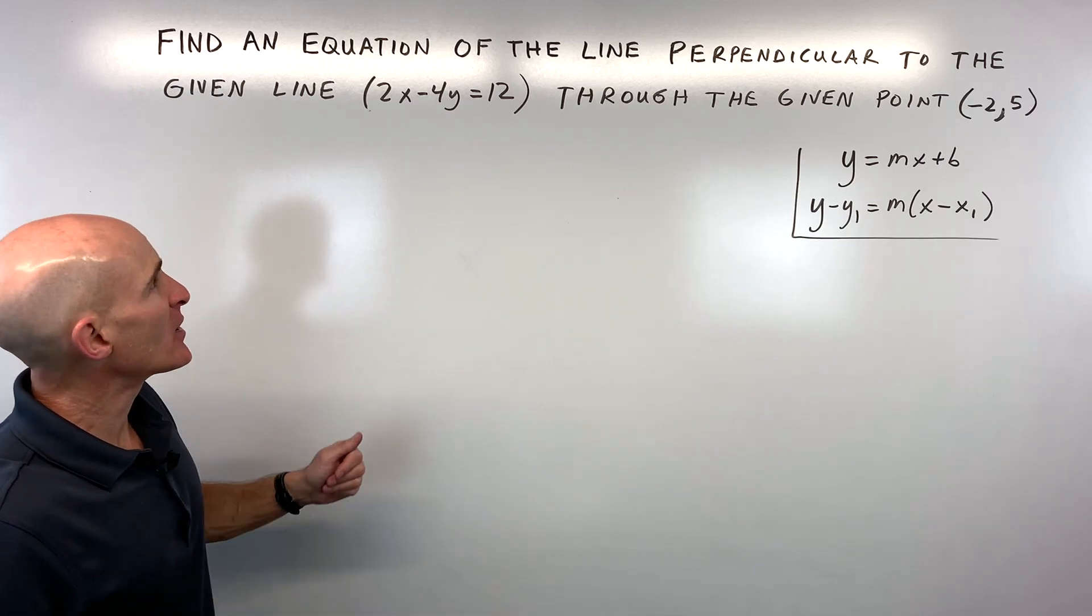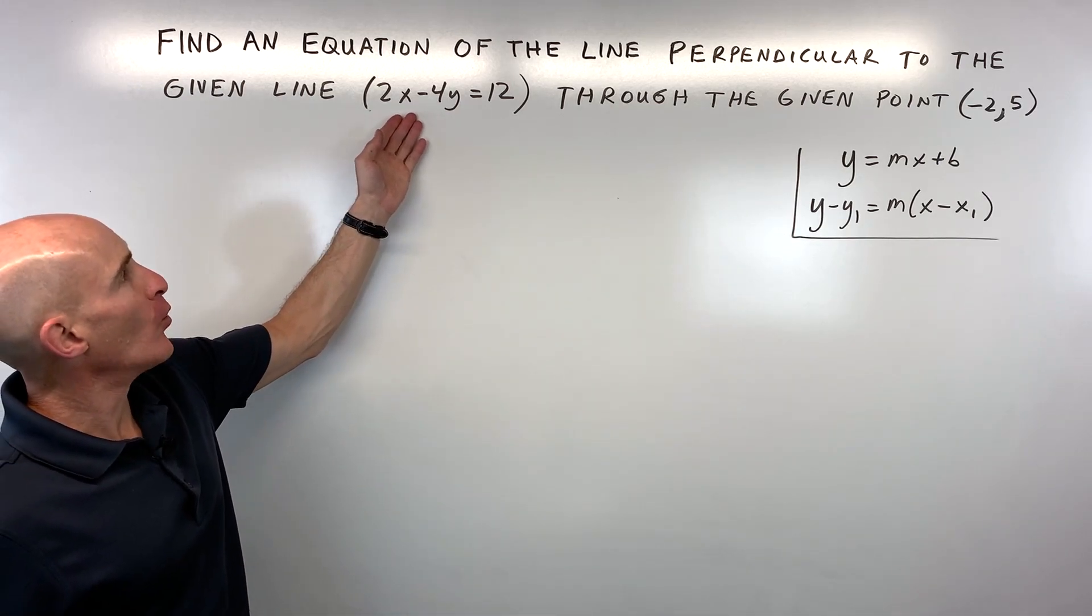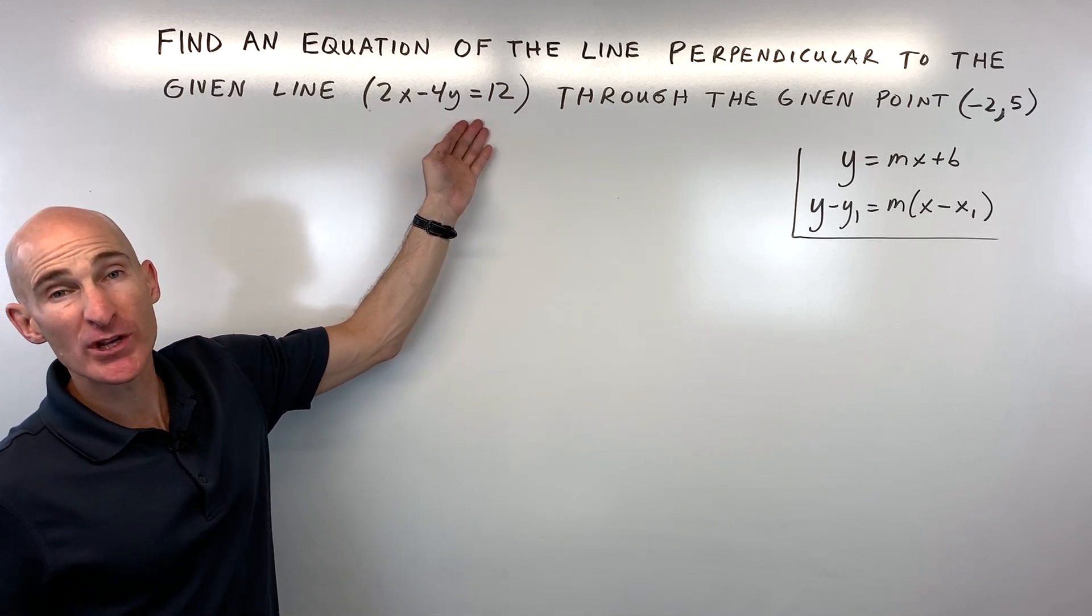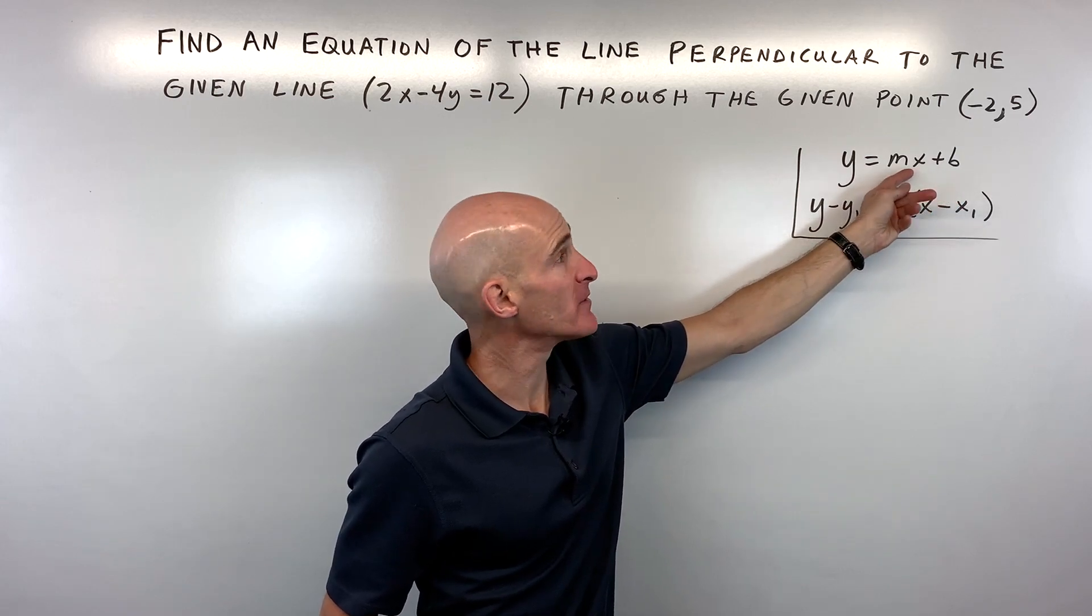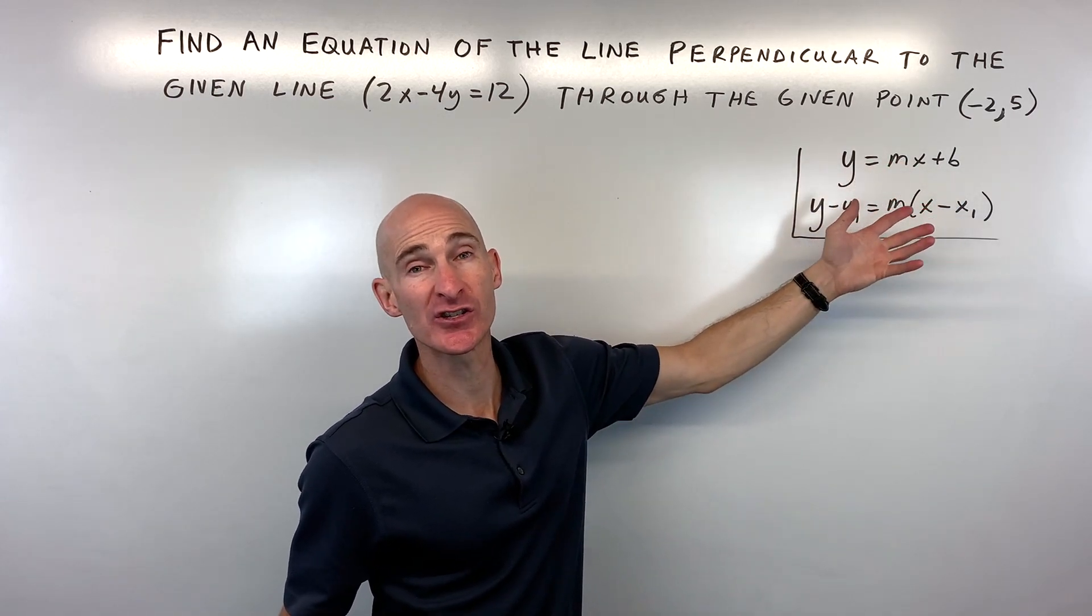The first thing we want to do is figure out what is the slope of this original line. In order to do that, we need to rearrange it into slope-intercept form so we can identify our m value or our slope.